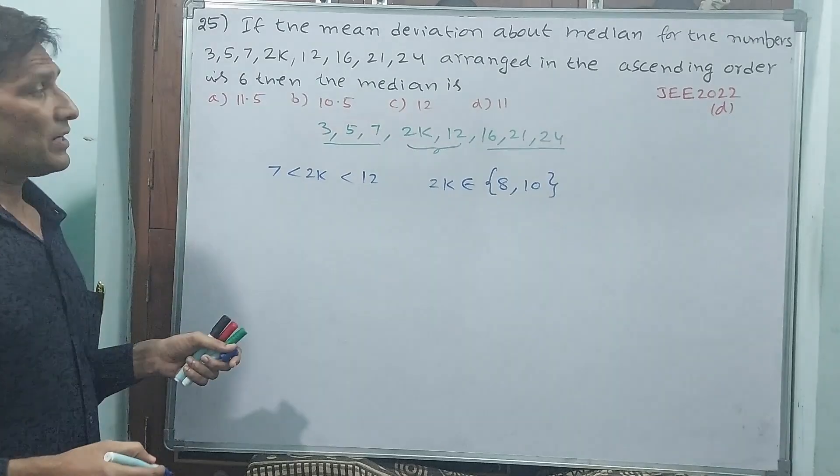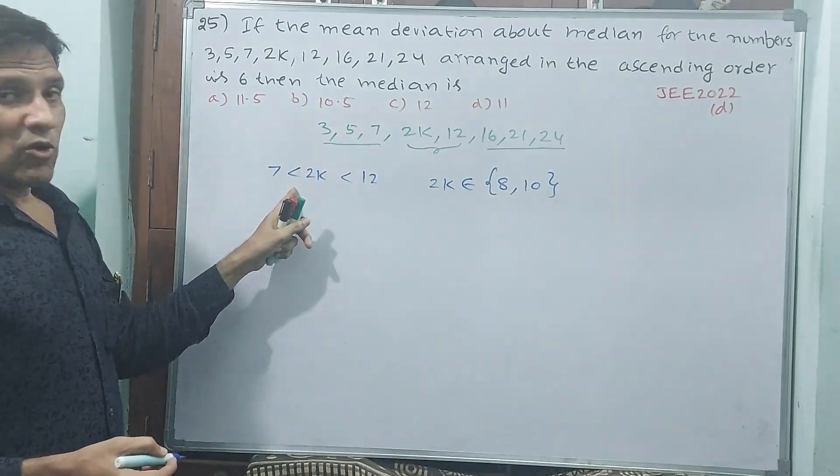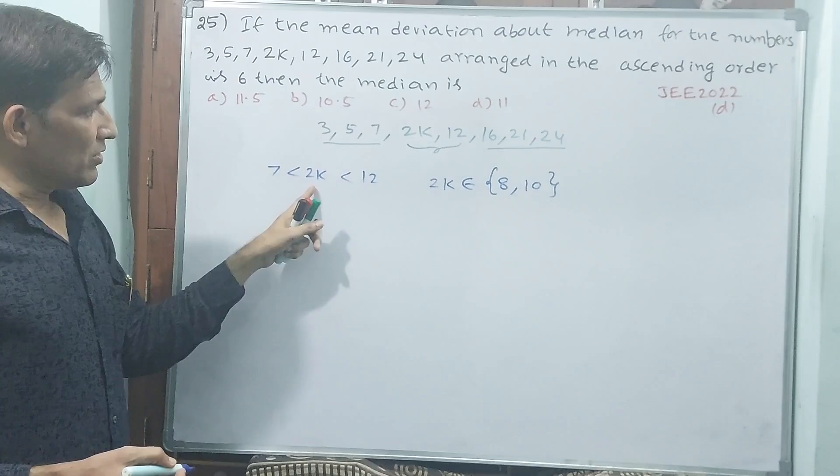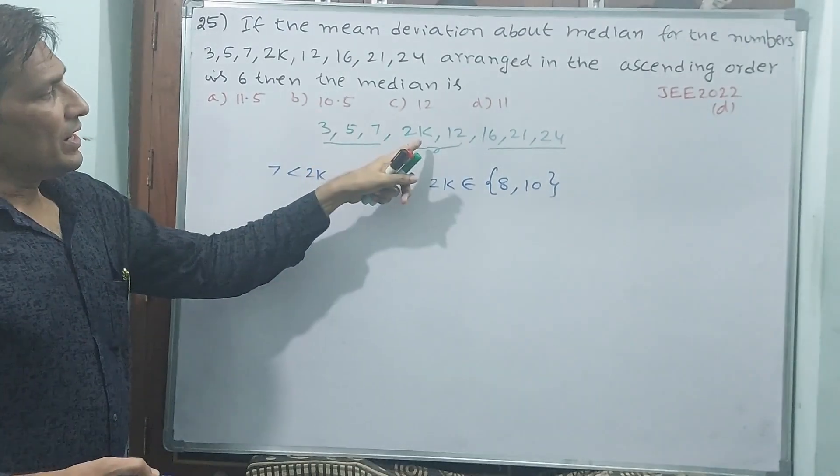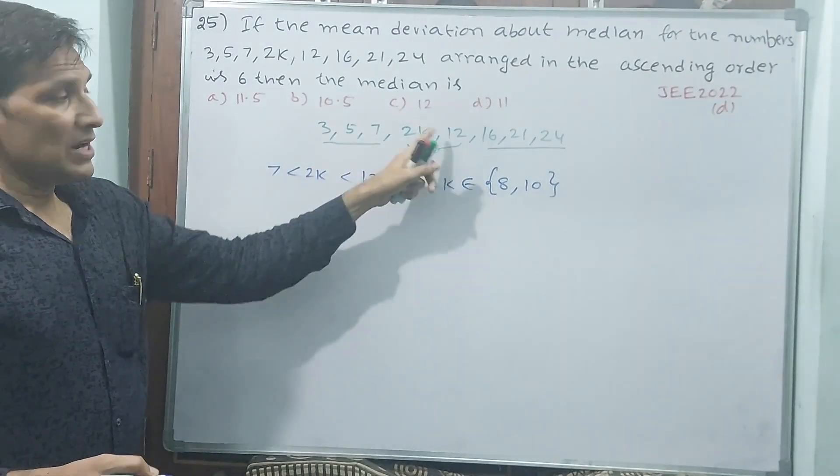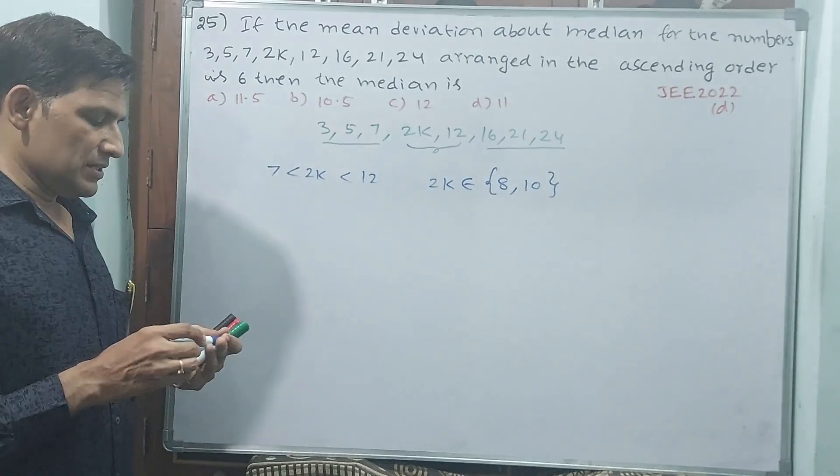Is it okay? Definitely okay, why? Because after 7, then 8 will come. 9 will not come because 2K is there. And 10 will come. 11 will not come because 12 is available.